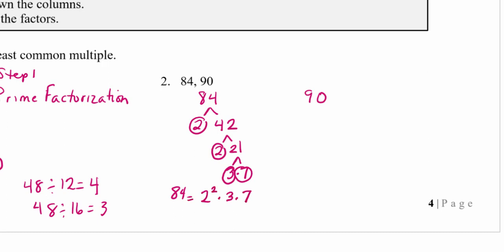Now for 90: 2 goes into 90 forty-five times, then 5 goes into 45 nine times (since 5 times 9 is 45), and 9 is 3 times 3. So the prime factors of 90 are one 2, two 3s, and one 5.